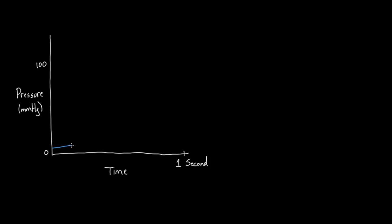First, the left ventricle. The pressure rises slowly, then the left ventricle contracts really hard — that's what causes the pressure to rise abruptly. Then it relaxes and eventually the pressure falls. Blood reaccumulates into the chamber from the left atrium, which is why the pressure kind of goes back up again. That's a quick overview of the left ventricle.